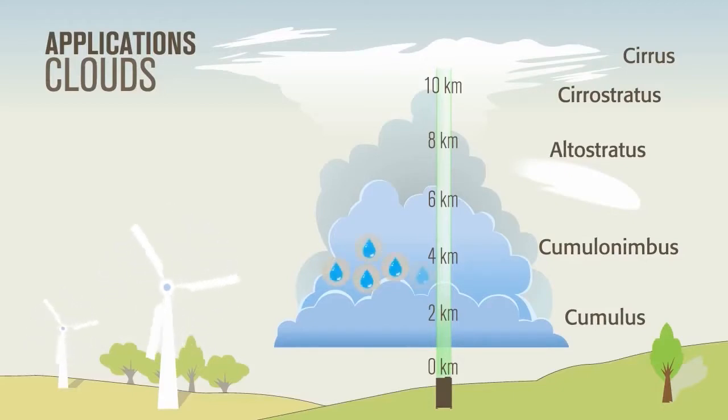With two detection channels to measure different polarizations of the backscattered signal, MPL can determine whether clouds contain liquid, ice, or both.